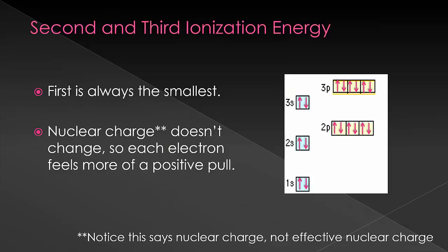Now let's make one quick comment about the second and third ionization energies, and then we'll do some examples in class using them. So the first one will always be the smallest. When you go to pull off that first electron, you're starting from a place where you have the same number of protons as electrons.